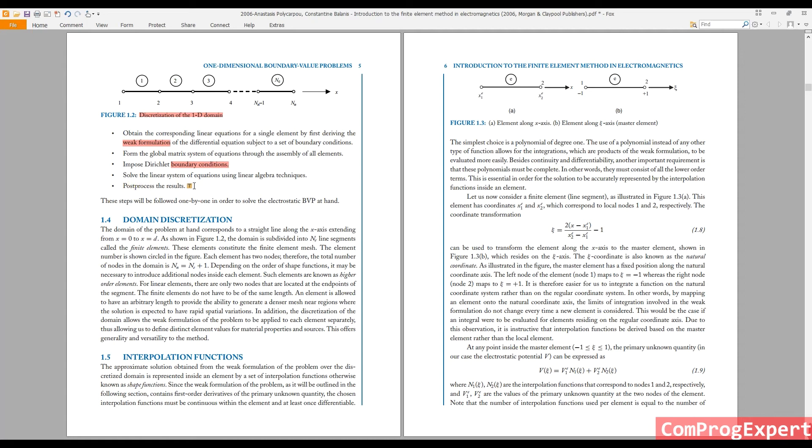Finally, solving the global matrix system of equations and post-processing of the results. When you solve the global matrix equation, you have the value of voltage at each mesh point. If you want to calculate the value of voltage at any desired point, you can use one-dimensional interpolations.